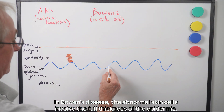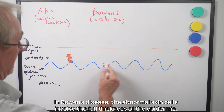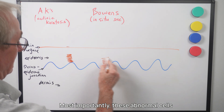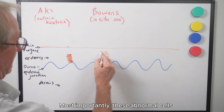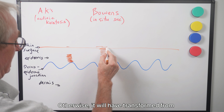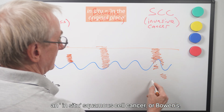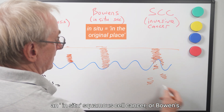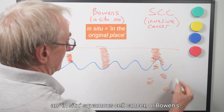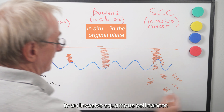In Bowen's disease, the abnormal skin cells involve the full thickness of the epidermis. Most importantly, these abnormal cells don't breach the basement membrane. Otherwise, it will have transformed from an in situ squamous cell cancer — Bowen's — to an invasive squamous cell cancer.